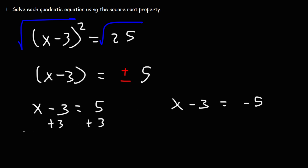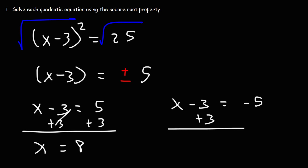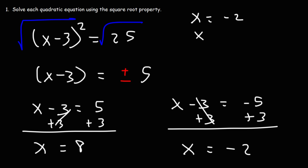We add 3 to both sides of the first equation and get x equals 8. If we add 3 to both sides of the second equation, we get x equals negative 5 plus 3, which is negative 2. So we have two answers: x is equal to negative 2 or x is equal to positive 8.